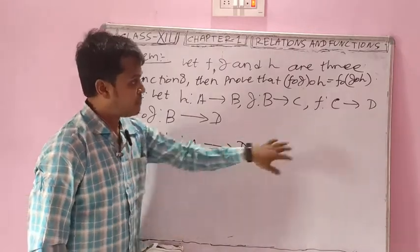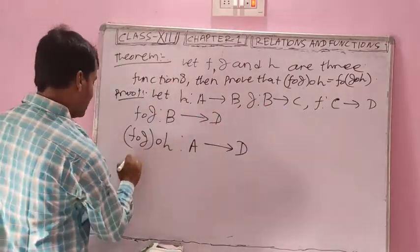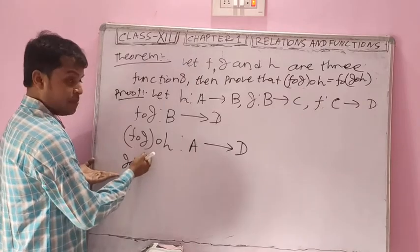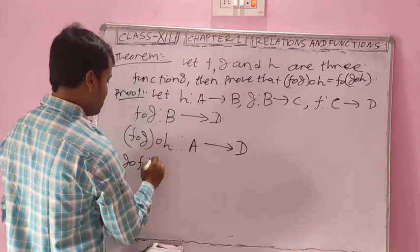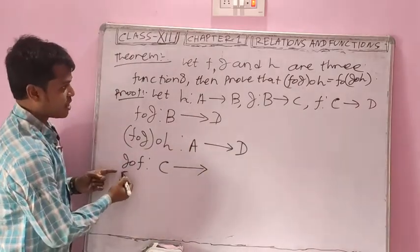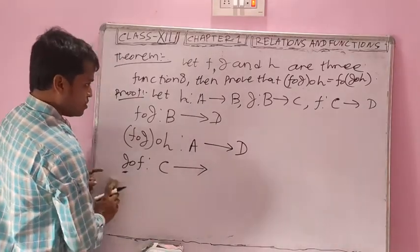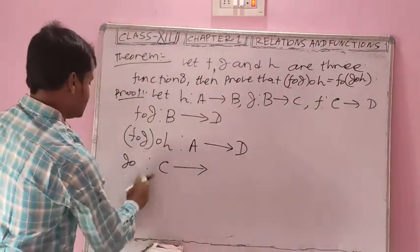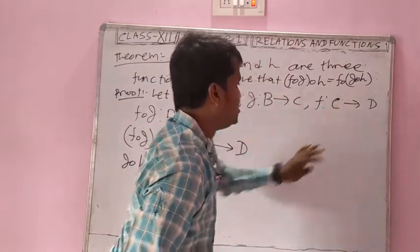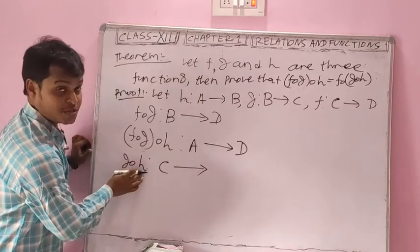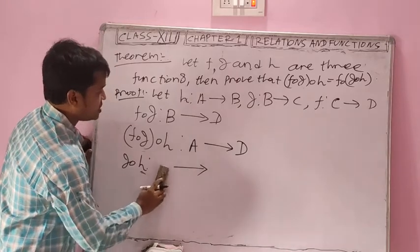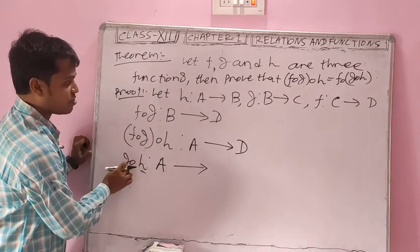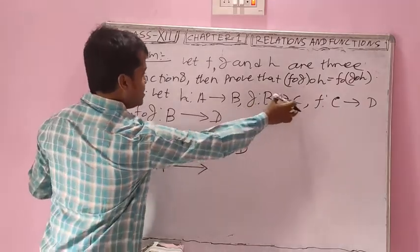Now come to the right-hand side. First find out g∘h. The domain of g∘h equals the domain of h, which is A, and the codomain of g∘h equals the codomain of g, which is C. So g∘h goes from A to C.